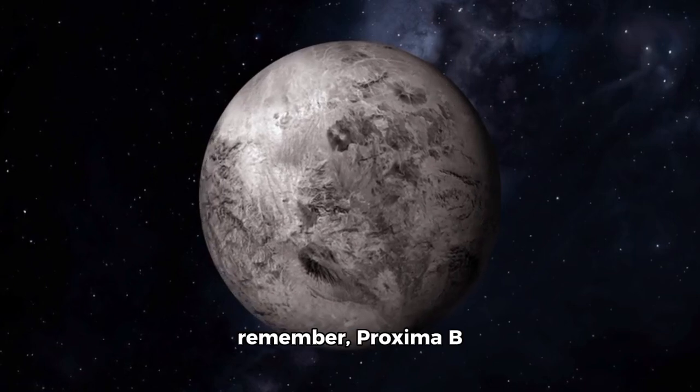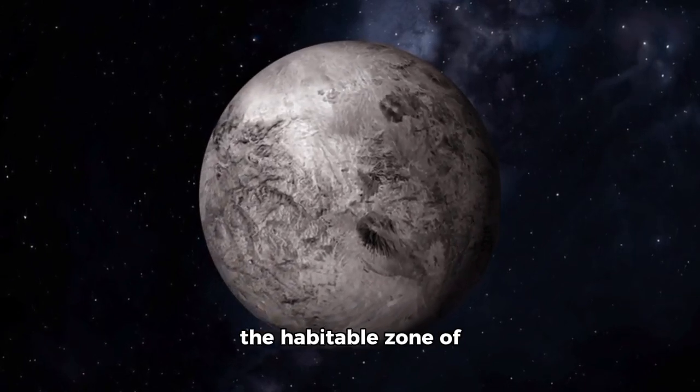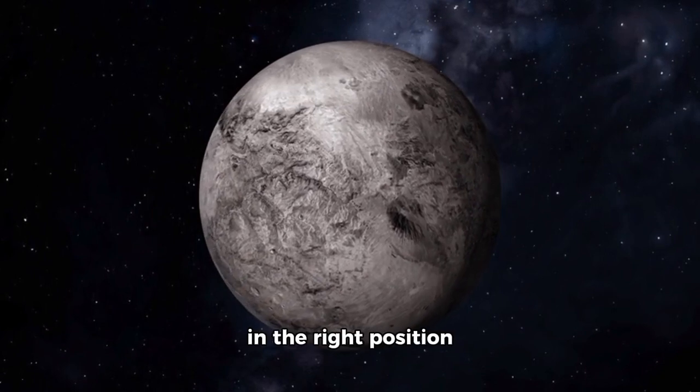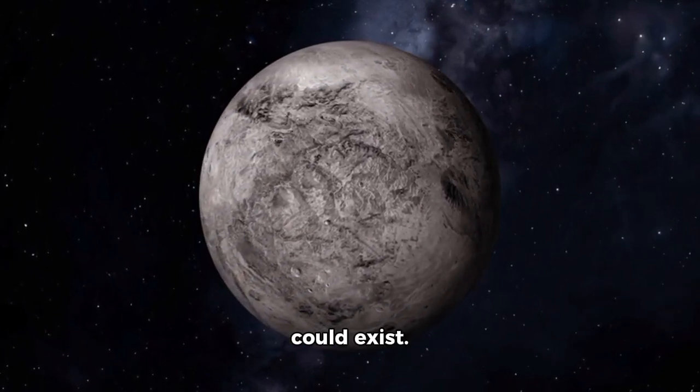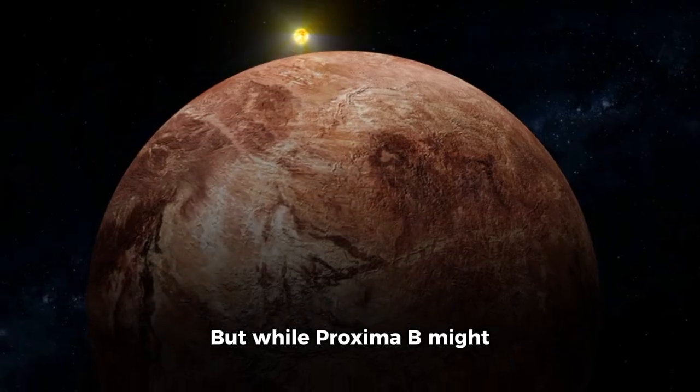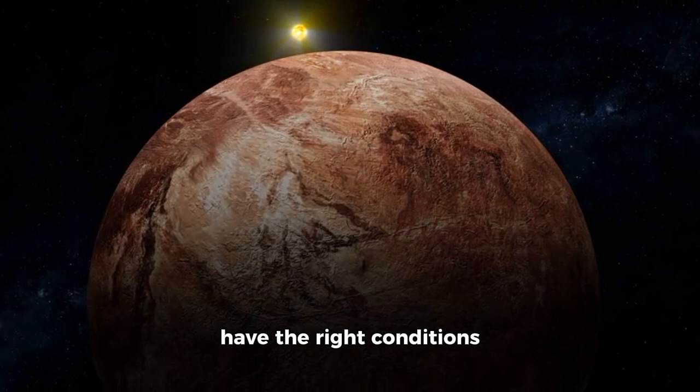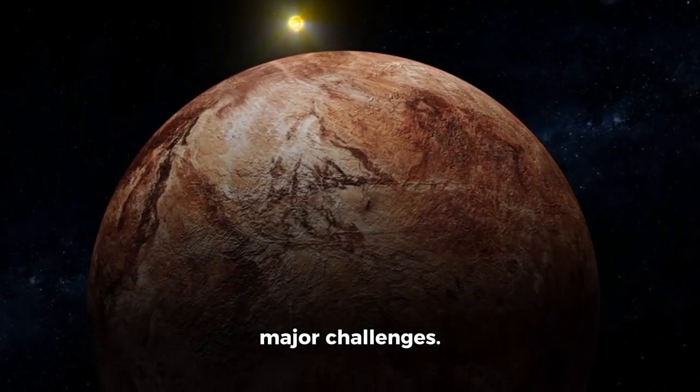Now, the key thing to remember, Proxima B lies in what we call the habitable zone of its star, meaning it's in the right position where liquid water could exist. Water is essential for life as we know it. But while Proxima B might have the right conditions for liquid water, it's also dealing with some major challenges.